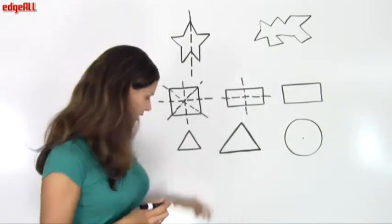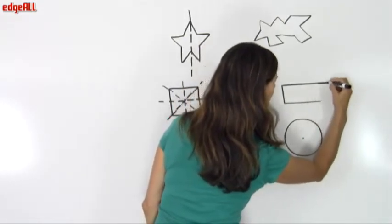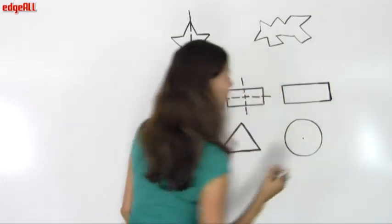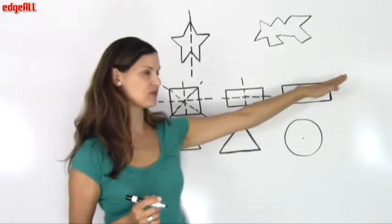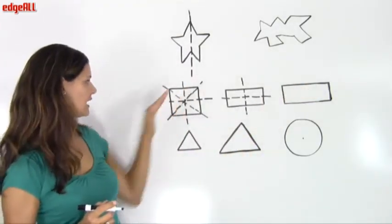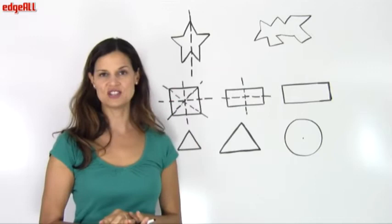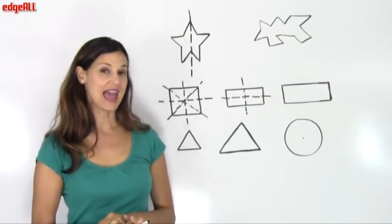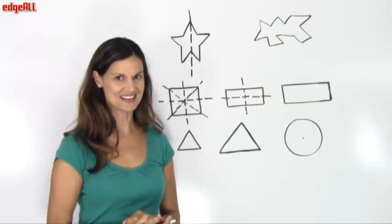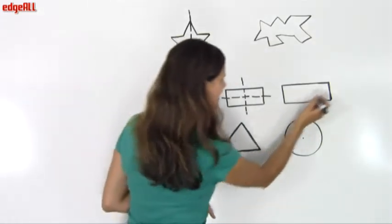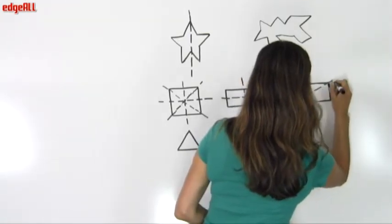Now with a rectangle — and I'm going to make my rectangle a little more elongated for demonstrating — let's talk about what happens when we draw a diagonal line across a rectangle. When we drew the diagonal line across the square, we had a perfect line of symmetry with mirror images on each side. However, when we look at the diagonal across a rectangle, we do not have a line of symmetry.